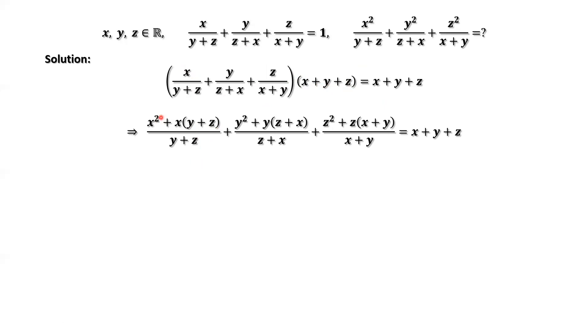If we split the first term into two parts, the second term, you have y plus z in the numerator, also in the denominator. They can be cancelled each other.